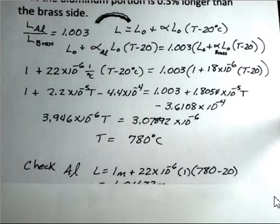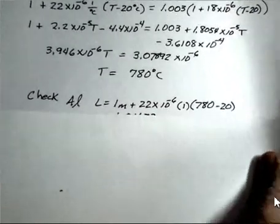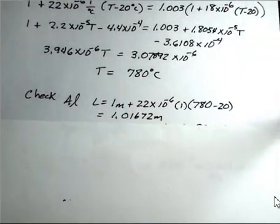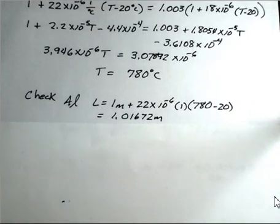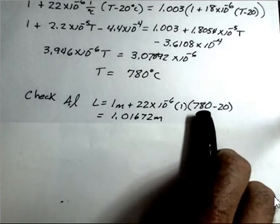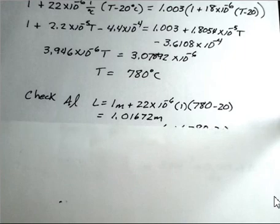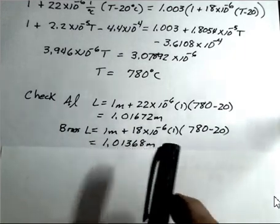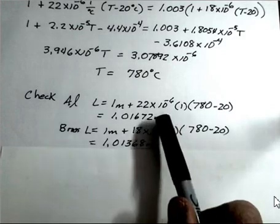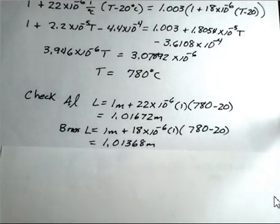Now, you might want to check your work. So what I did was I calculated what is the new length of the aluminum, assuming we start with one meter. It could start with anything, but I'm going to start with one meter. That's the easiest calculation. And I find that the aluminum now has a length of 1.01672 at this 780 degrees Celsius value. And calculate the length of the brass. And we have a number here. One thing to note is the aluminum is larger than the brass. So we're on the right track. We wanted the aluminum side to be larger.